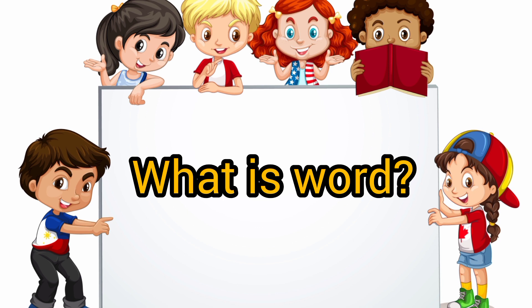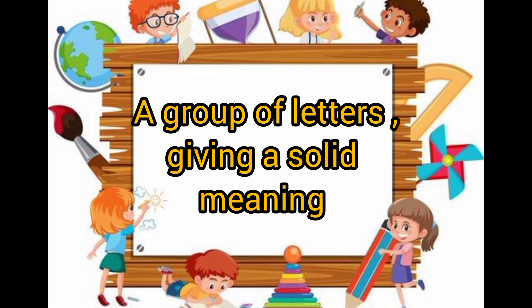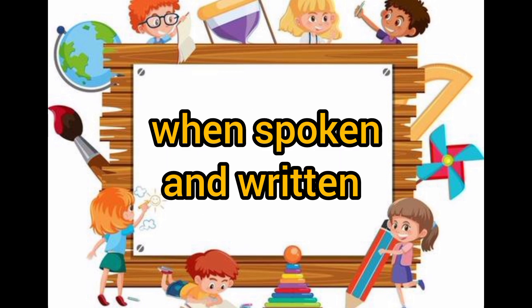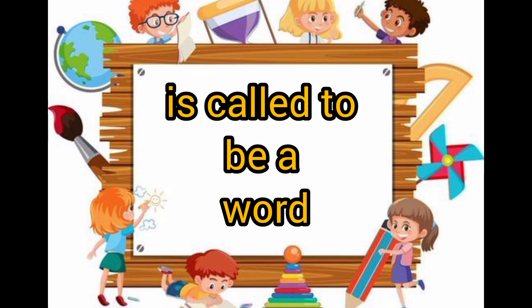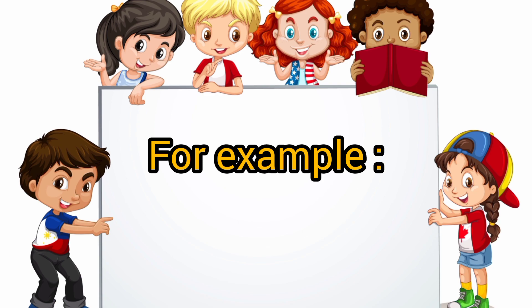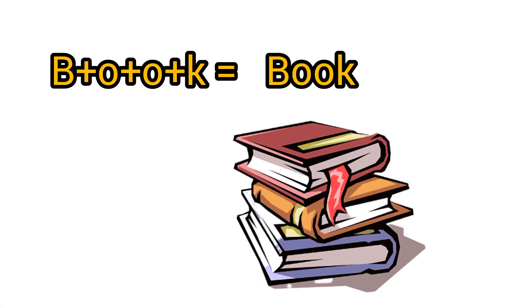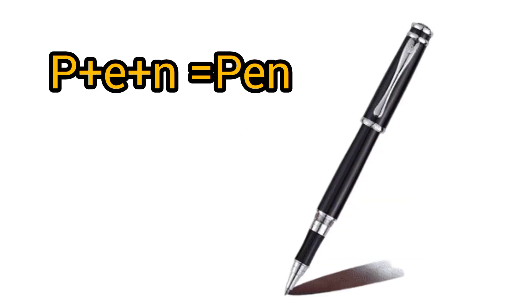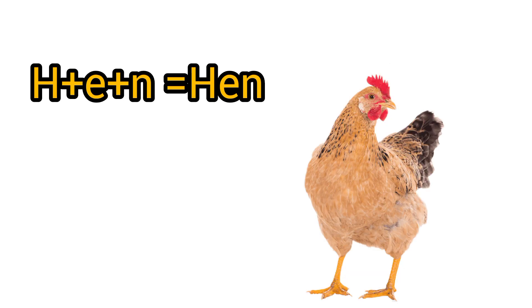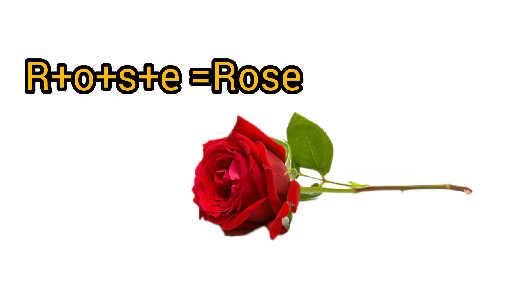What is a word? W-O-R-D. A word is a group of letters giving a solid meaning when spoken and written. It is called a word. For example: book, B-O-O-K, book; pen, P-E-N, pen; hen, H-E-N, hen; rose, R-O-S-E, rose.